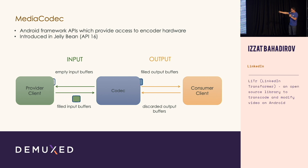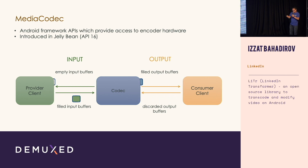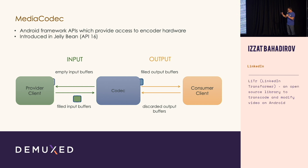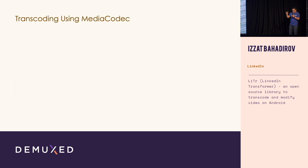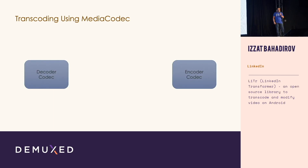You do this process continuously until all of your data is processed. So how do we transcode? We need two instances of MediaCodec — one running as a decoder, another one running as an encoder.